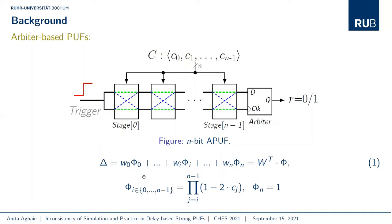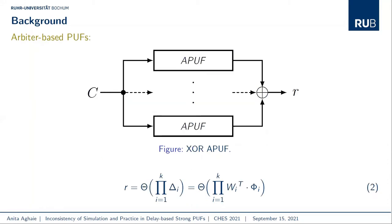The model also includes a feature vector derived from the given challenge C. At the end, the arbiter is represented as a sign function to decide whether the response is 0 or 1. This additive linear model can be extended to other delay-based PUF primitives. In order to increase the complexity of the PUF model and boost ML resistance, the XOR arbitral PUF has been applied as a fundamental element as well.